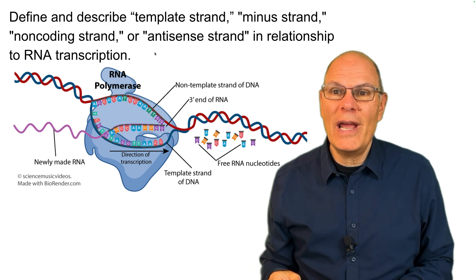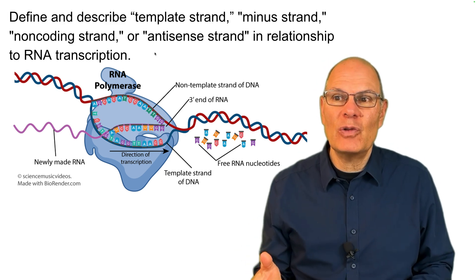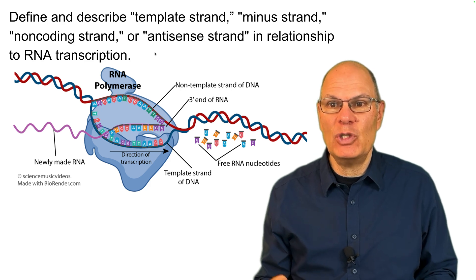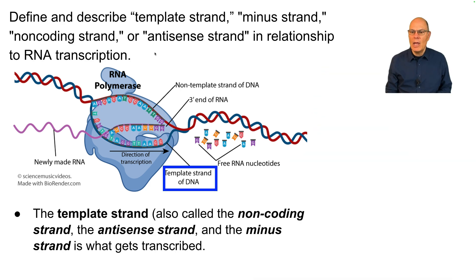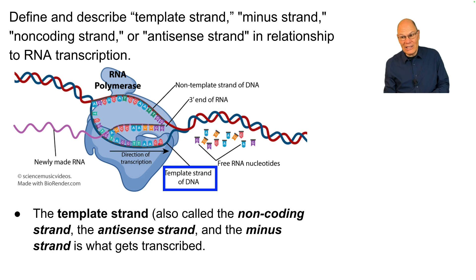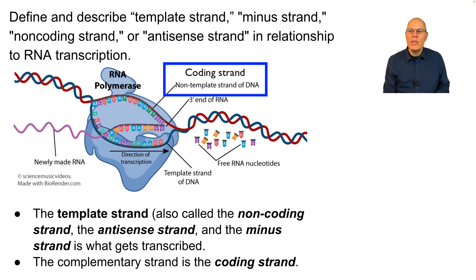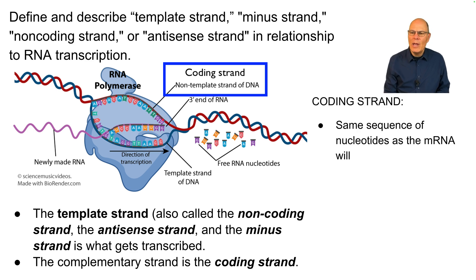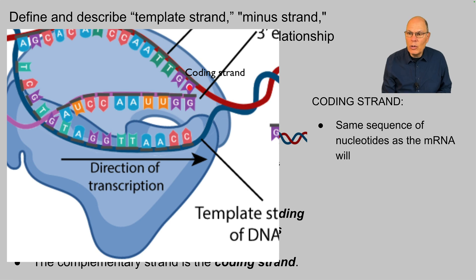Define and describe template strand, minus strand, non-coding strand, or antisense strand in relationship to RNA transcription. The template strand — shown here in blue — is also called the non-coding strand, the antisense strand, and the minus strand. That's what gets transcribed from DNA into RNA. The complementary strand to the template strand is called the coding strand, because it has the same sequence of nucleotides as the mRNA will.